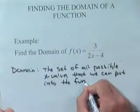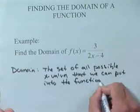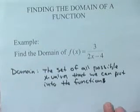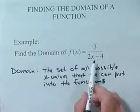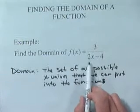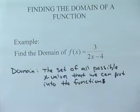So let's try to figure out all the possible x values that we can put into this function. Well, notice I could put a 1 in because f(1) would be 3 over 2(1)-4. We could get a value out of it. I could put all kinds of numbers in for x. So what you might want to do is figure out what can you not put in for x.